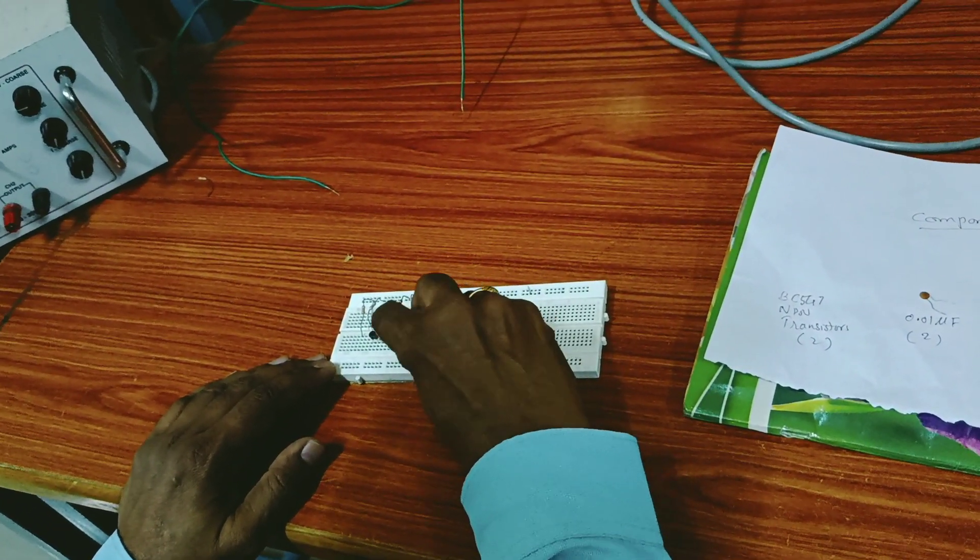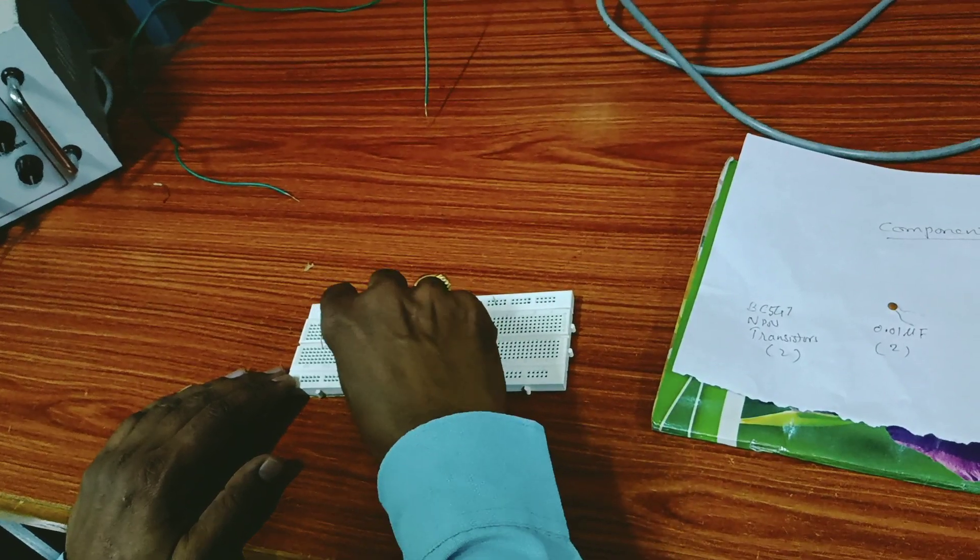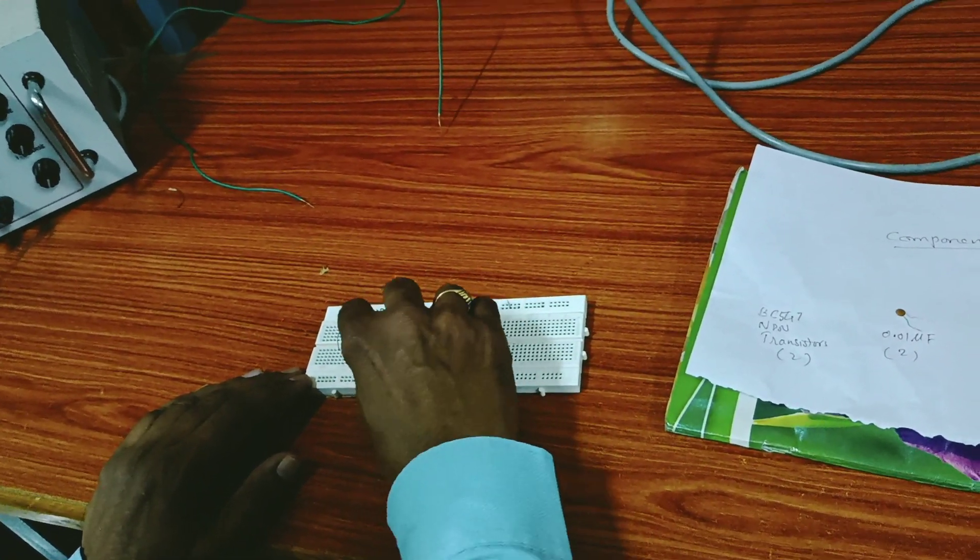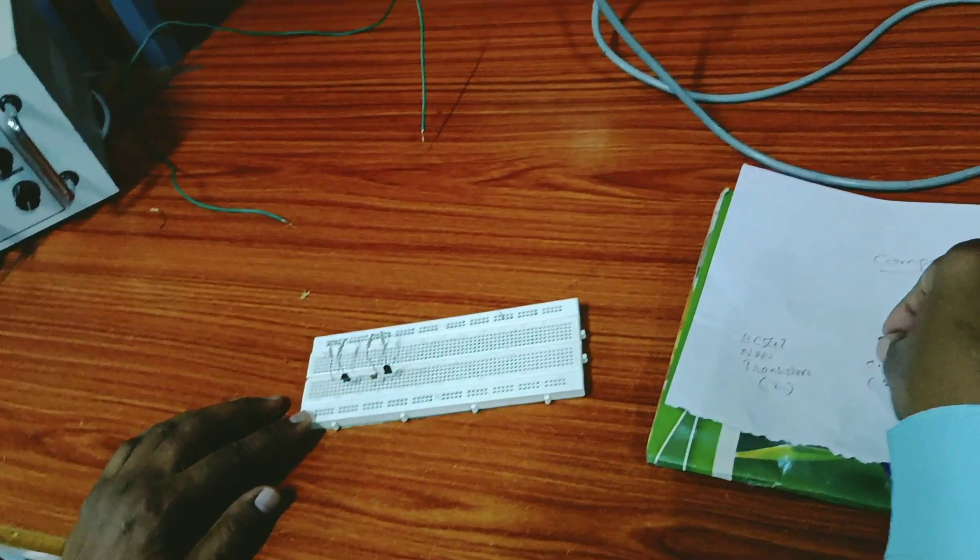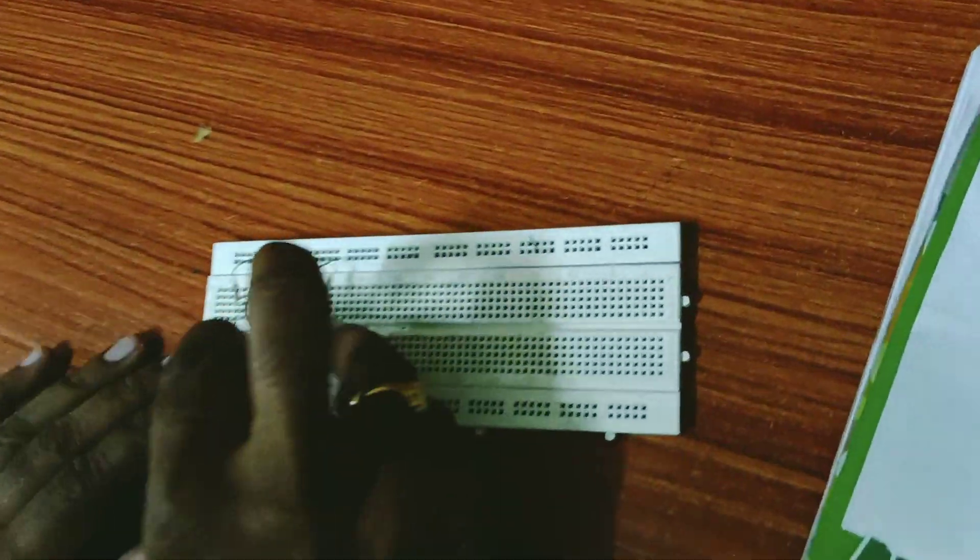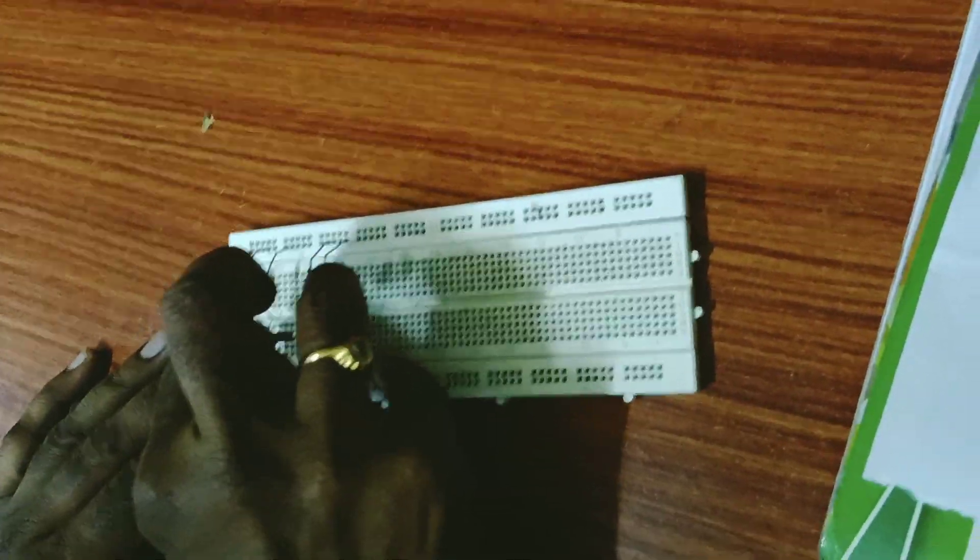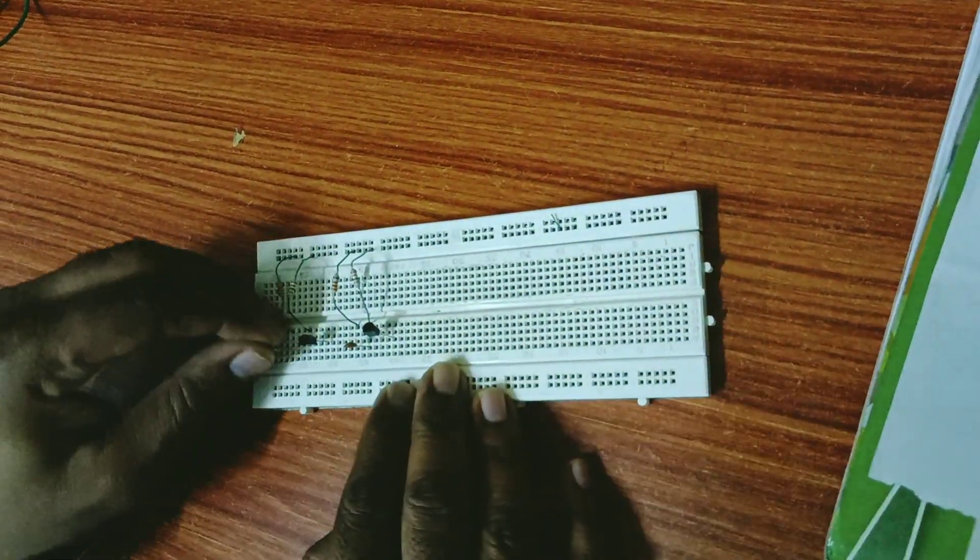Then between the two terminals of the resistors, that is from transistor collector to the 33 kilohm resistance, connect one capacitor like this. Here one more capacitor.